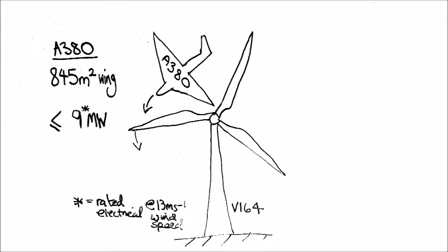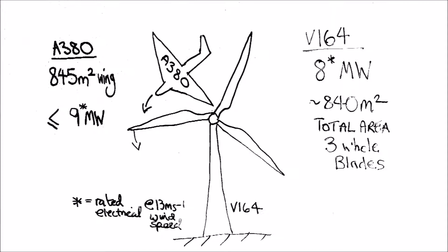The A380 wing area is 845 square meters, so the best possible rated power is about 9 megawatts. The total area of all three blades of the wind turbine is about 840 square meters, so roughly the same as the A380.